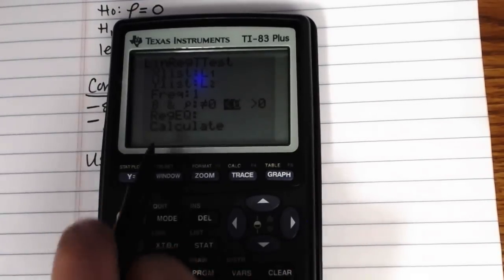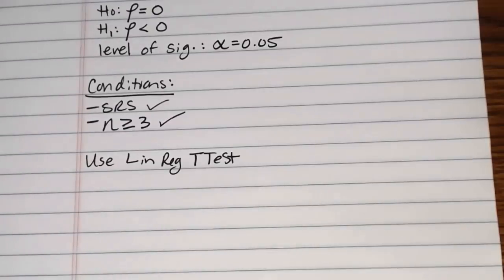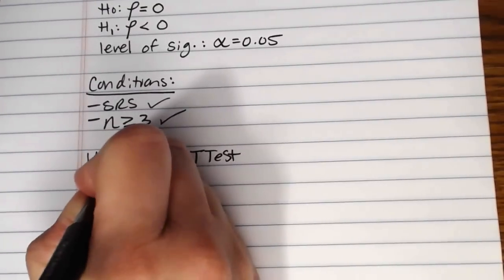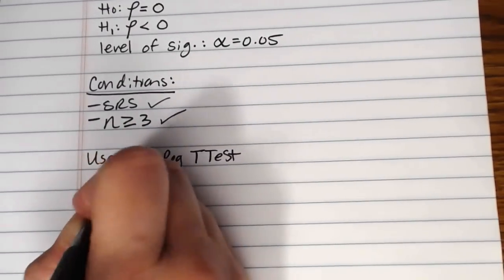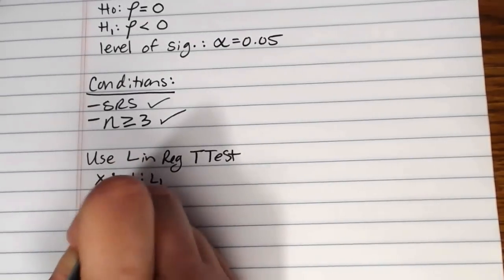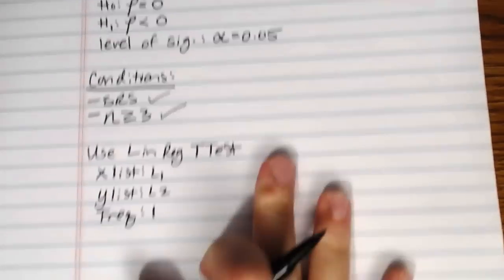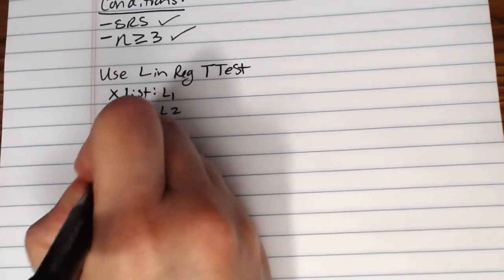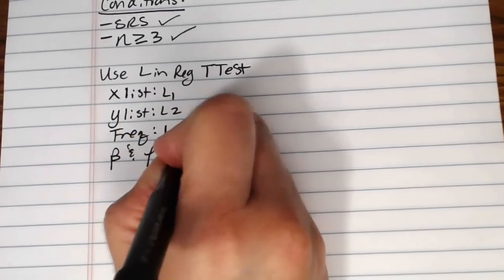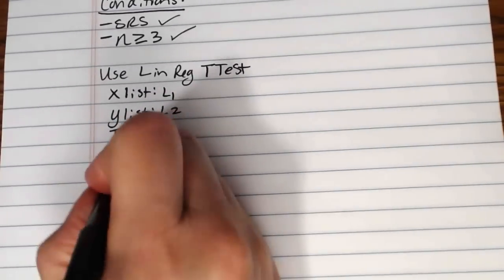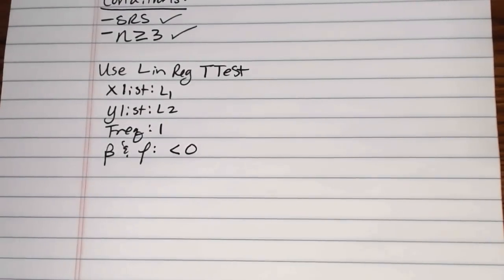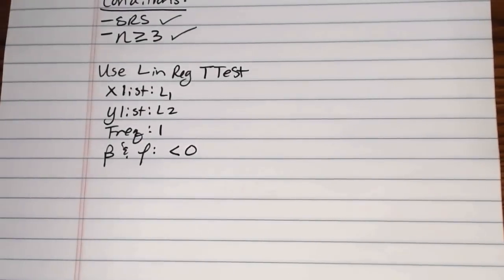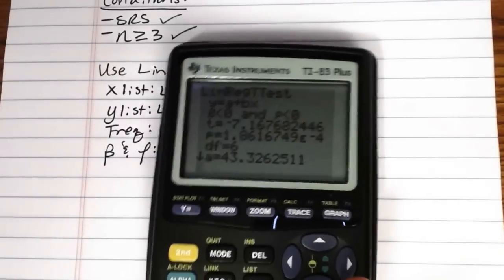And then when you have that all set up, you would put calculate. But for the purposes of testing or just notating what it was that you did, you probably want to make a sketch of this on your paper. So x list was L1, y list L2, frequency was one, beta and rho less than zero. And then we calculate from there. You don't need to put in the thing about reg eq. So we'll do that.